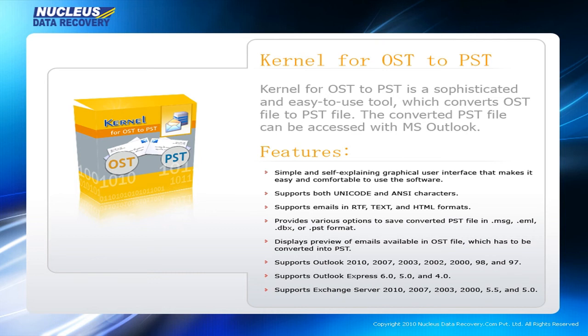Kernel for OST to PST is a sophisticated and easy-to-use tool which converts OST files to PST files. The converted PST file can be accessed with MS Outlook. Key features include: a simple and self-explaining graphical user interface that makes it easy and comfortable to use; supports both Unicode and ANSI characters; and supports emails in RTF, text, and HTML formats.